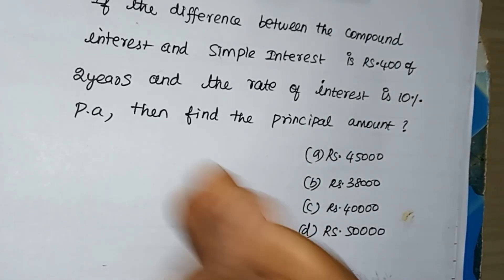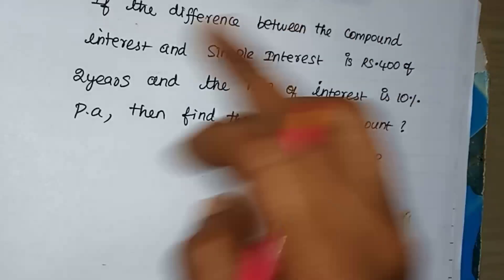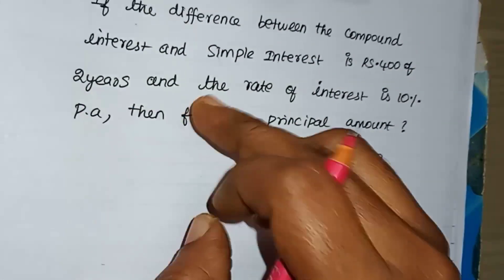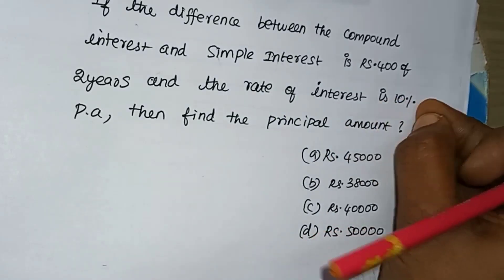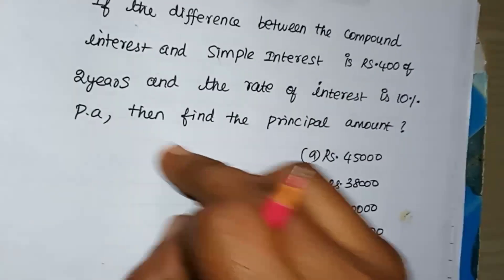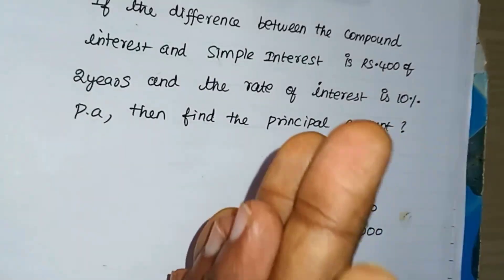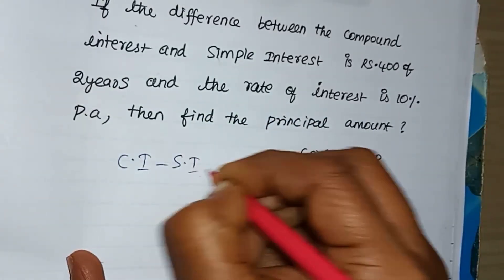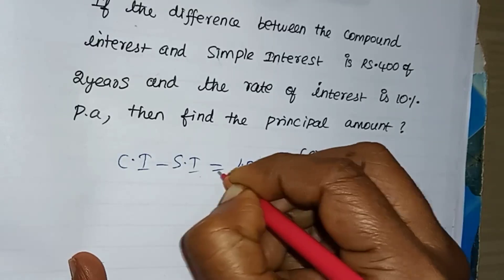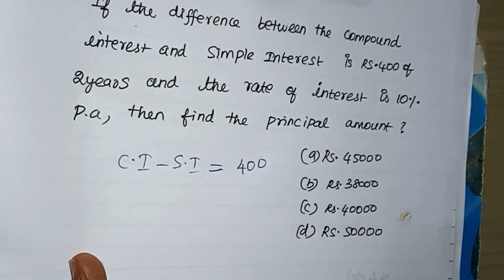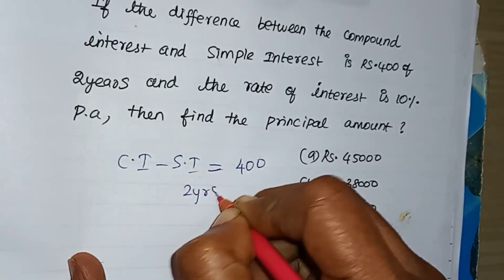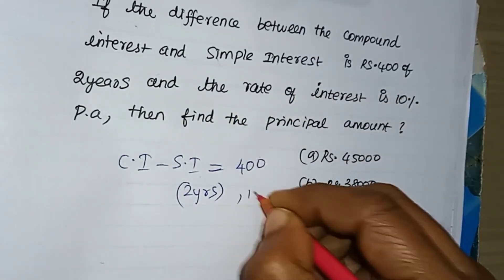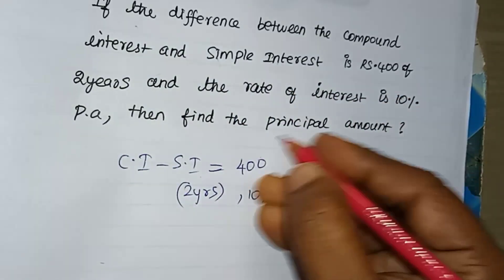Compound interest is an important question. If the difference between compound interest and simple interest is Rs. 400 for 2 years and the rate of interest is 10% per annum, find the principal amount. The time period is 2 years and the rate of interest is 10%.